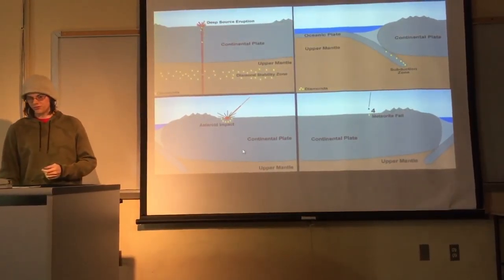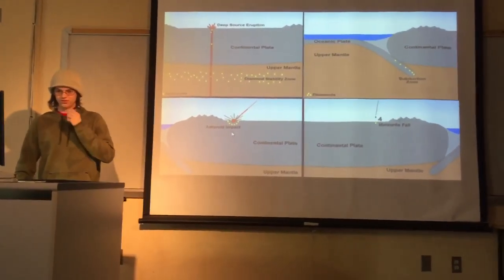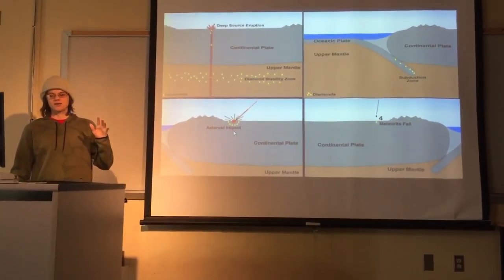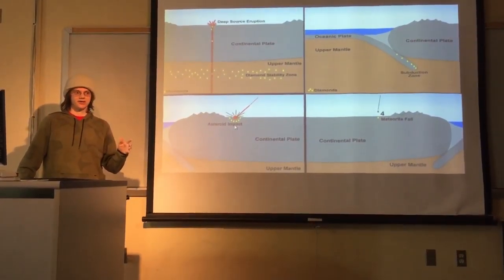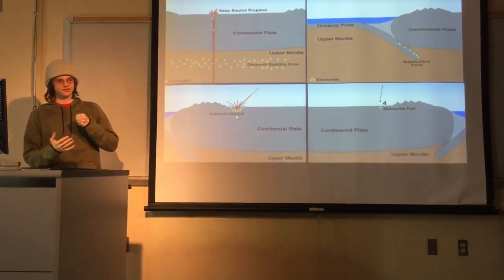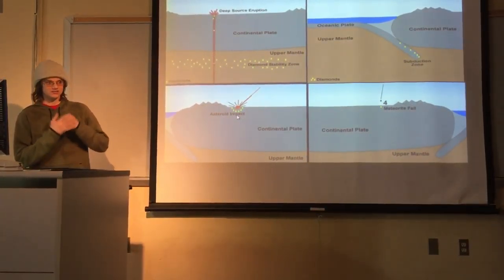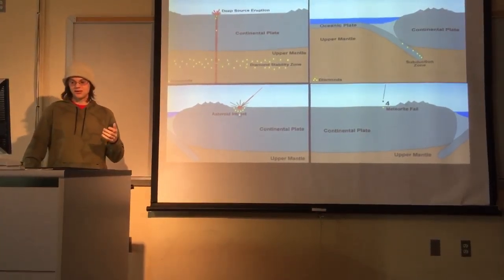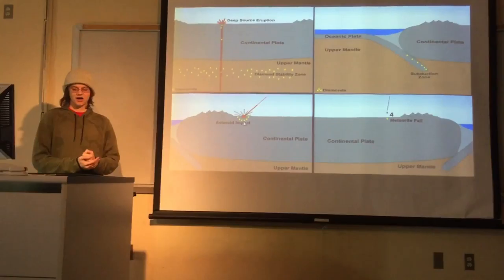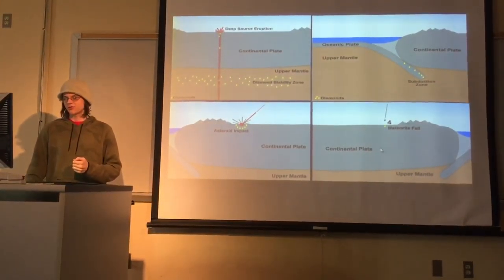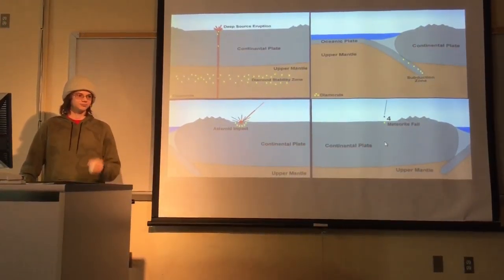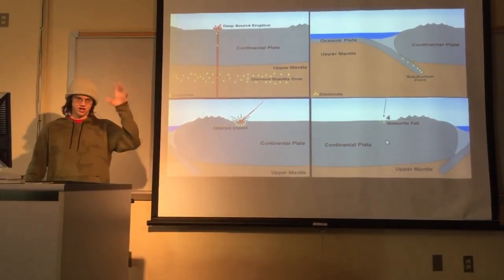The third way is asteroid impact. This is the only way that coal can help the process of creating a diamond, because the asteroid impacts the earth and creates pressure and heat large enough to turn coal into diamond. The fourth way is creation in space, and then the diamond just comes down to earth.